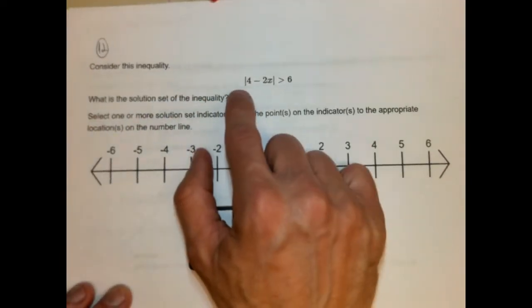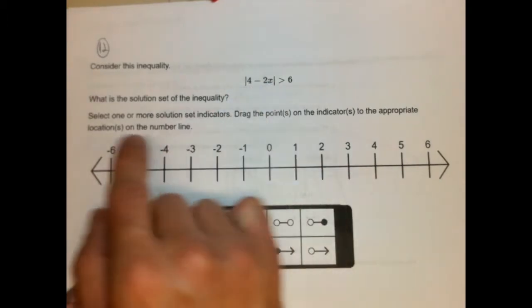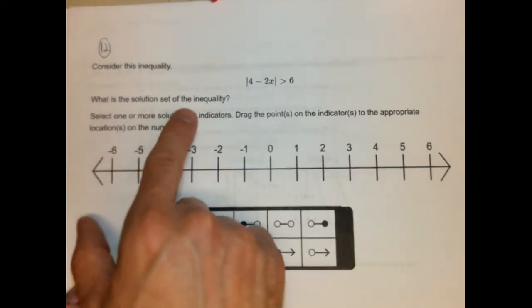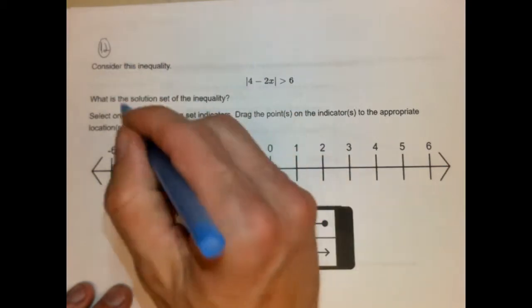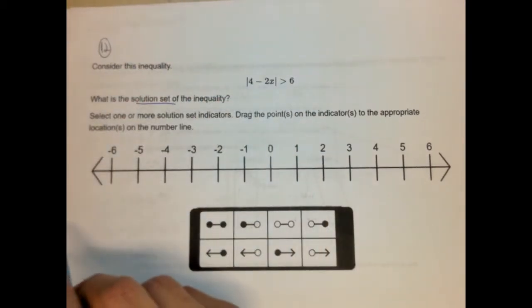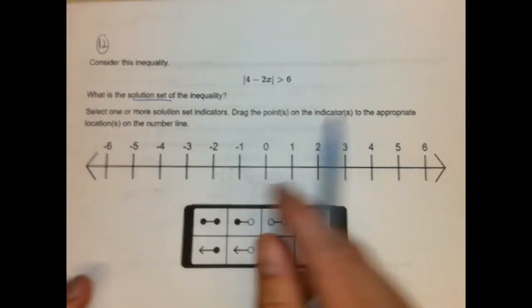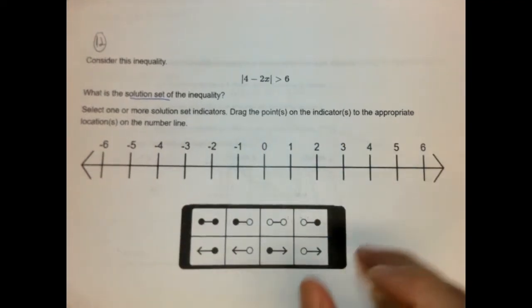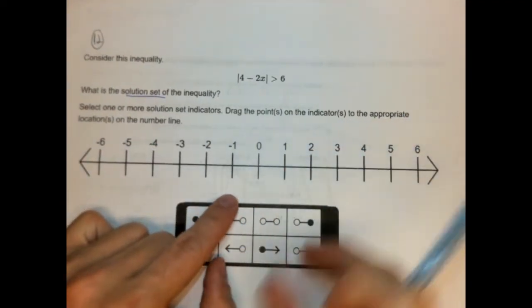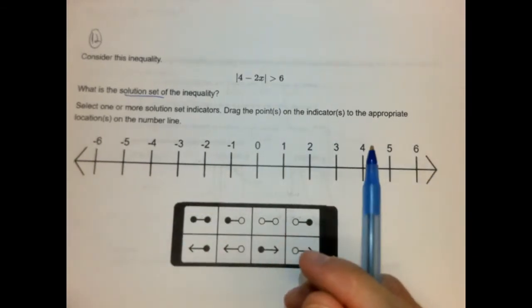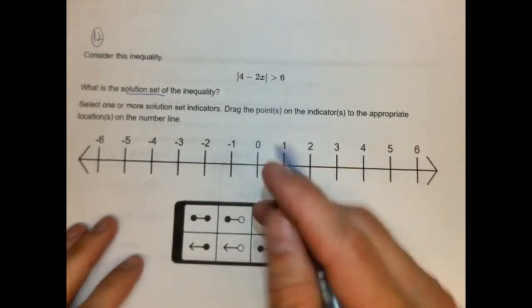Okay, so let's go ahead and jump into it. Consider this inequality: the absolute value of 4 minus 2x is greater than 6. What is the solution set of the inequality? So they're asking for the solution set. So we have an absolute value inequality. Select one or more solution set indicators, drag the point. Okay, so the way it's going to work is you're going to click on something, it'll appear on the number line, and you can drag the circle. That's how this works.